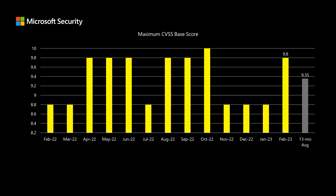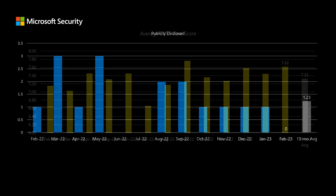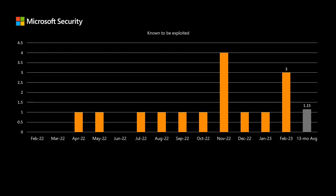This month the highest rated CVSS score is 9.8 on that scale of 10, and we've been averaging right around 9.35 over the past 13 months. The average score across all 77 vulnerabilities is 7.62, which is about a quarter point higher than our average of around 7.3. There are no publicly disclosed vulnerabilities in the set this month; we've been averaging right around one and a quarter. Finally, when we look at vulnerabilities known to be exploited in the wild, there are three in today's set, which is quite a bit higher relative to our average of just over one.